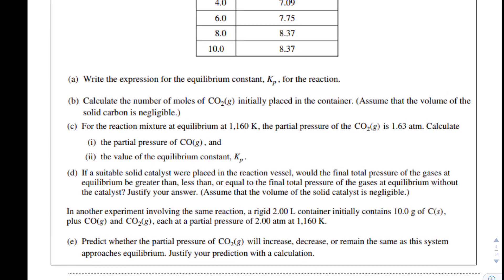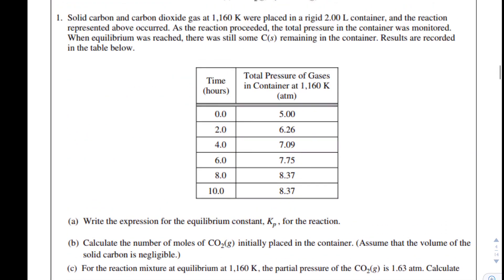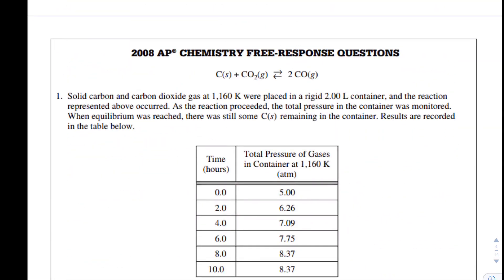When equilibrium was reached, there was still some solid carbon remaining in the container. Results are recorded in the table given. Write the expression for the equilibrium constant Kp for this reaction. Okay, so I'm going to do that up here. What a lot of people will do is they'll say K is equal to CO squared over CO2 times C. And there's a couple things wrong with this. One, carbon's a solid, so we wouldn't want to include it.